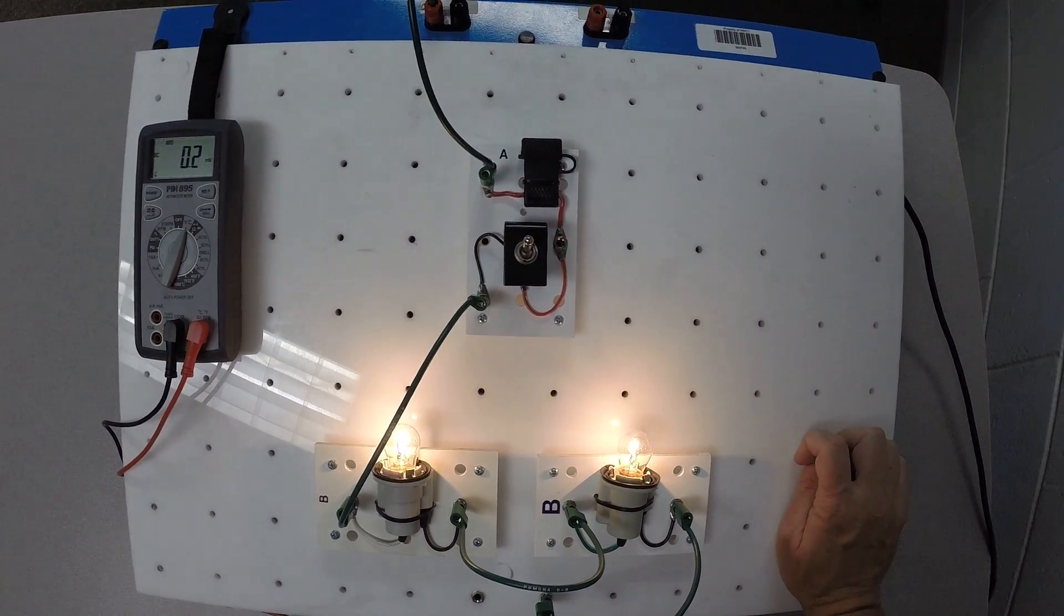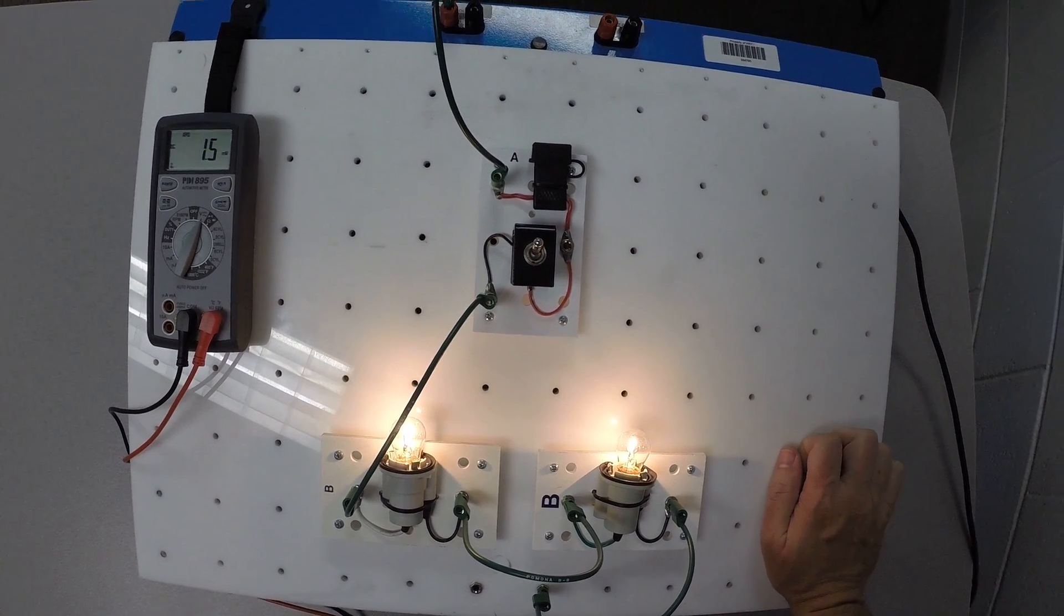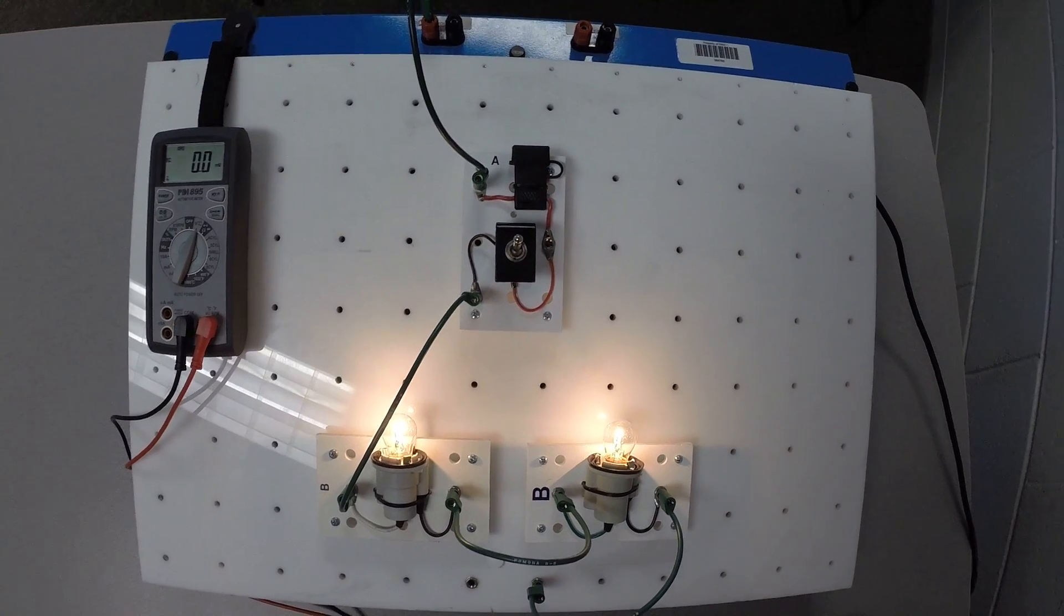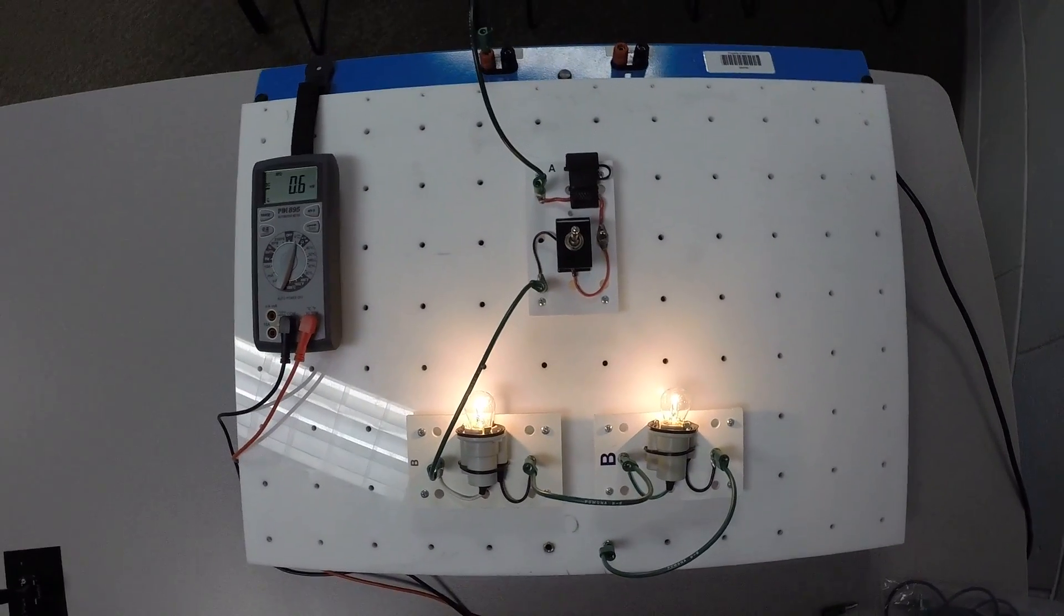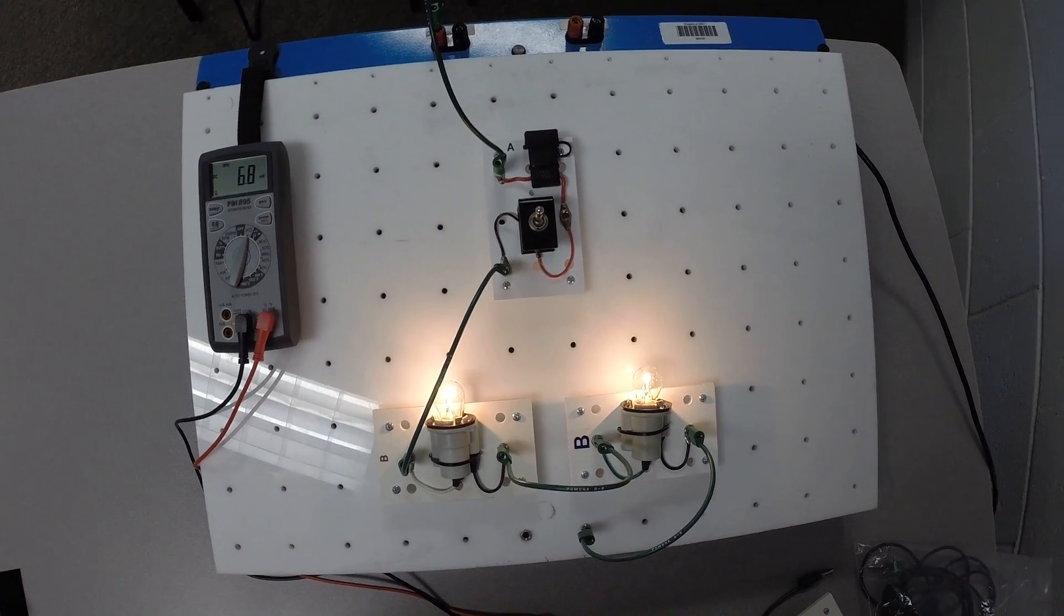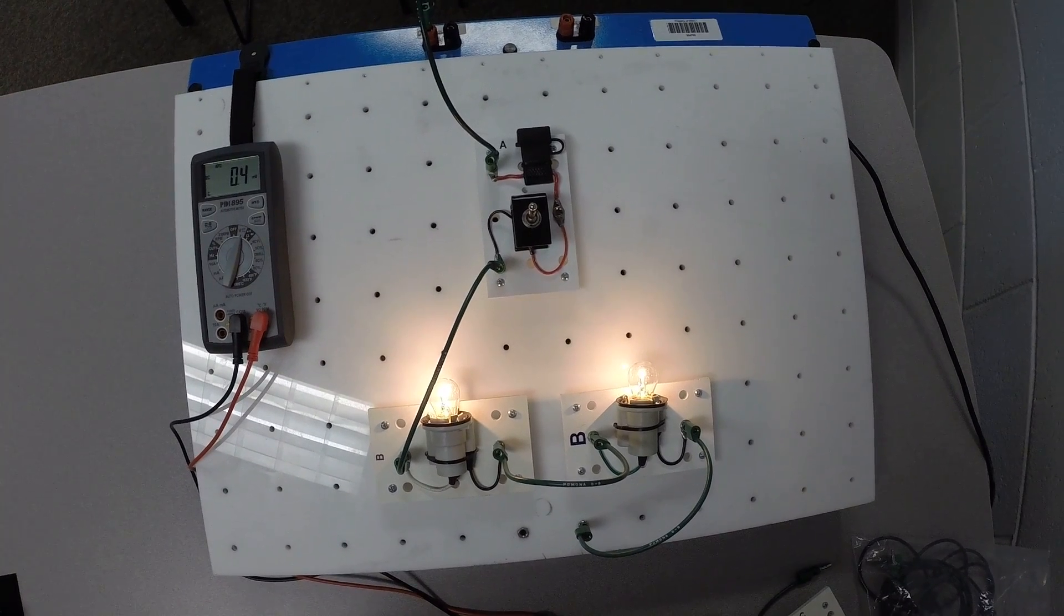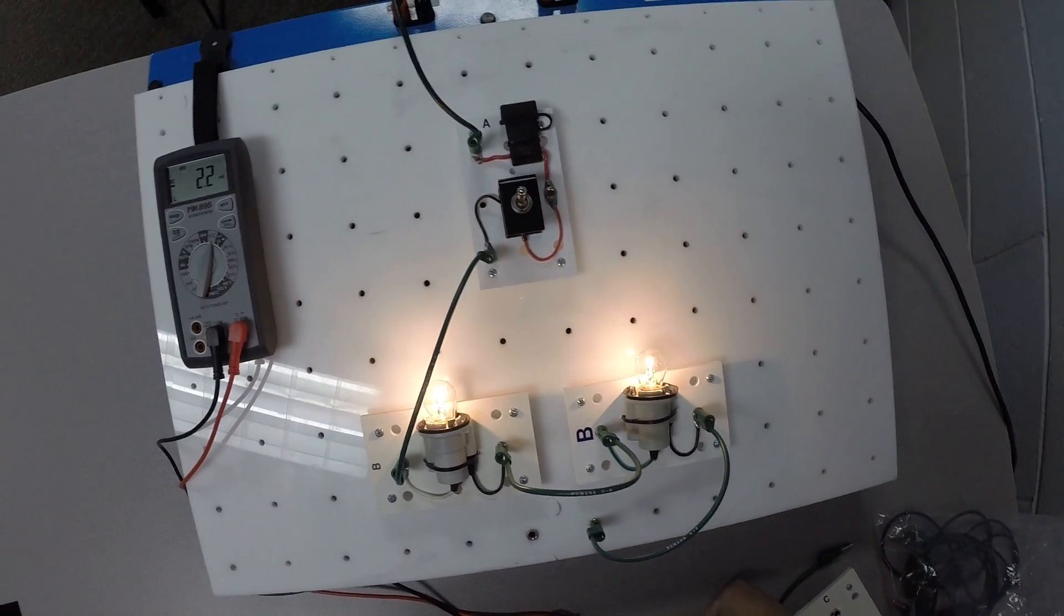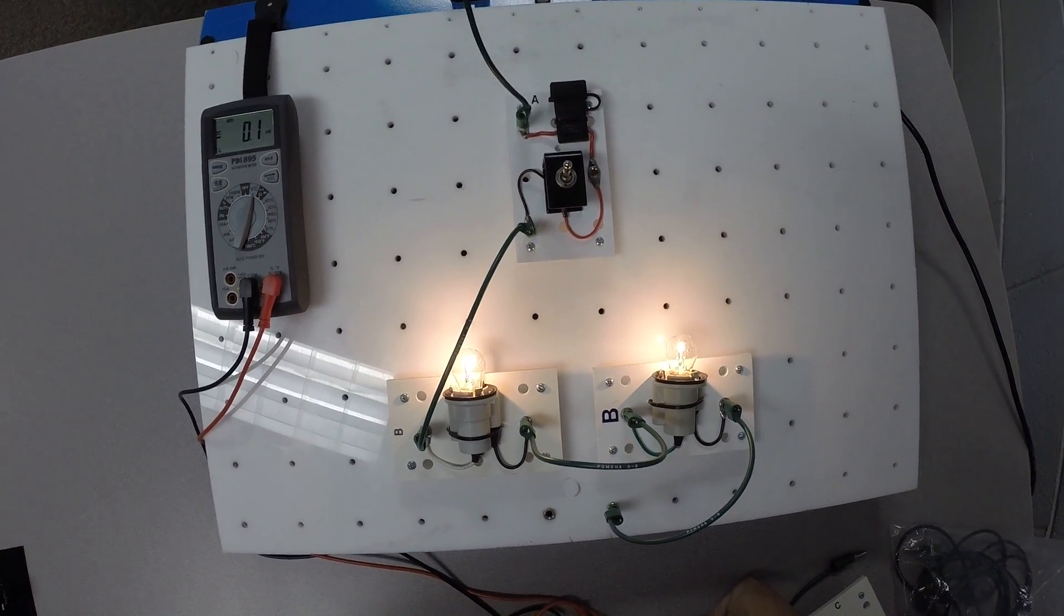So if we had a bad switch here, and we were doing that voltage drop test, we would see how much voltage is being used up in the switch. Now, it should be none, or next to nothing. The specifications that we usually use on basic electrical circuits like this is no more than half a volt dropped on the positive side of the circuit.